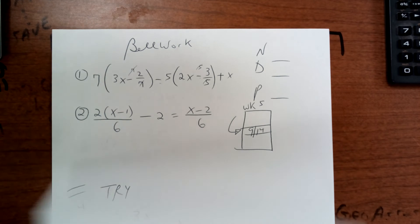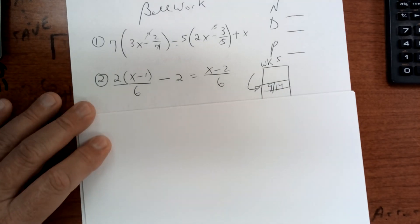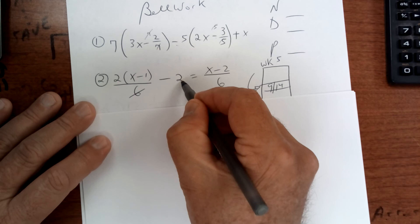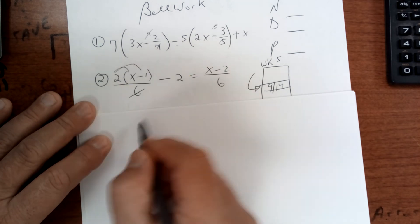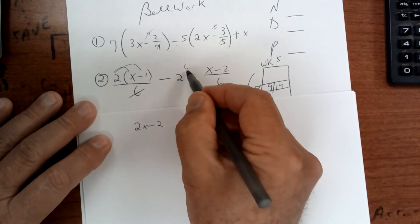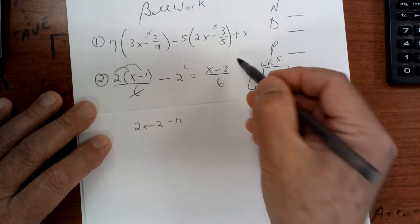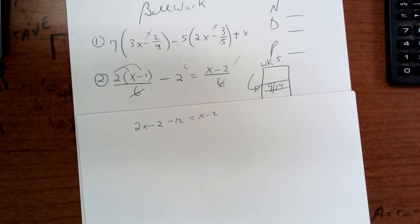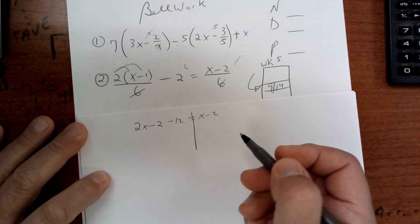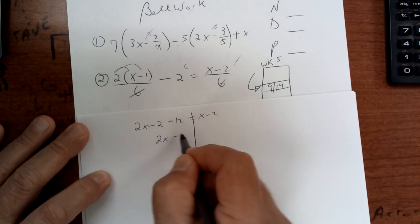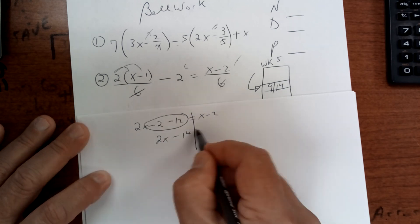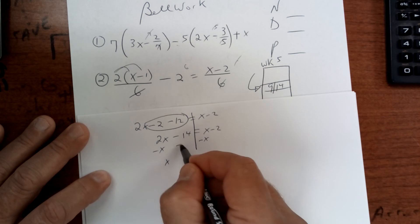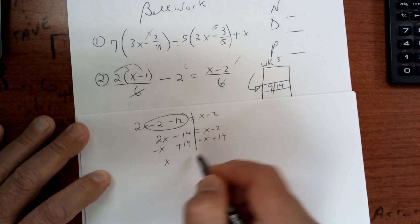This one I would multiply everything by 6. When you put a 6 here it cancels with this one; when you put a 6 here it's going to be 12, so distribute: I get 2x minus 2. Then 6 here gives minus 12; when you put a 6 right here it cancels and you get x minus 2. Step back and check it — I get 2x minus 14 equals x minus 2. Subtract x from both sides and add 14 to both sides — I get 12.